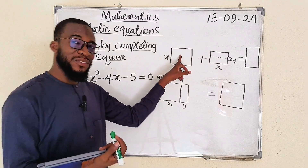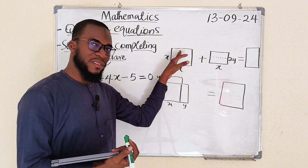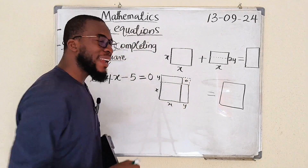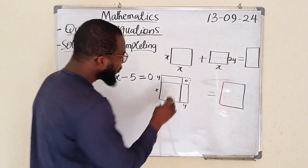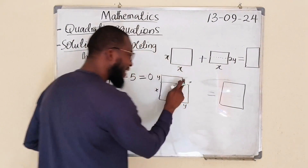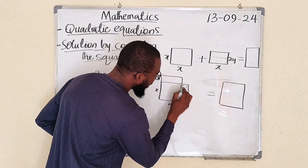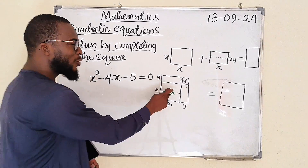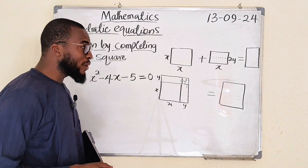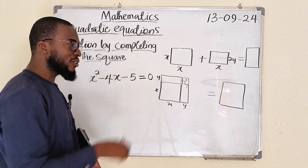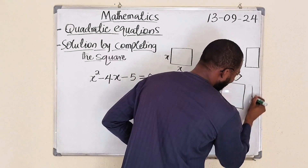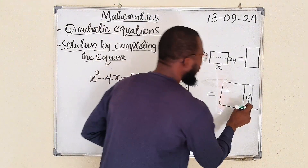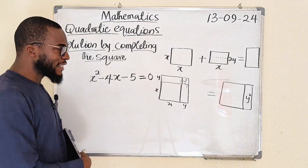So what we mean by completing the square here is: initially this was a square, but the moment we break down this rectangle and place it onto this, it is no longer a square. Because you can see we have a missing portion here — that is the missing part that can make the whole of this a square. What will be the area of this missing portion? Because we want to add it here to make it a complete square. Remember that this is y and this is also y, so that area will be y squared. We have added y squared here to make it a complete square.